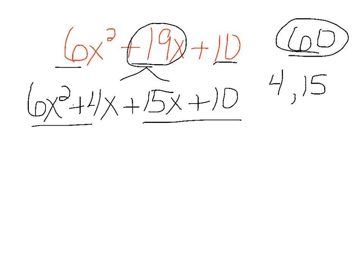Partner these up. 2x comes out of the first pair, leaving 3x plus 2. 5 will divide out of that second pair. Again, leaving 3x plus 2.